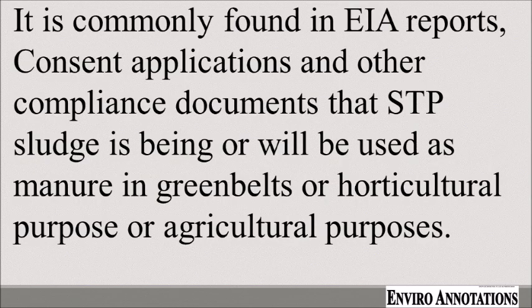This presentation is about disposal of sludge generated from sewage treatment plants, also called as STPs. It is commonly found in EIA reports, consent applications and other compliance documents that STP sludge is being or will be used as a manure in greenbelts or horticulture or agricultural activities.